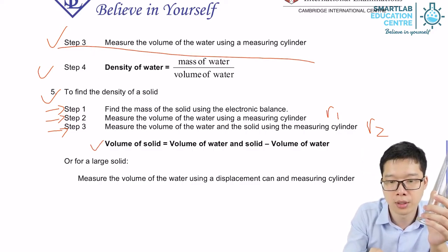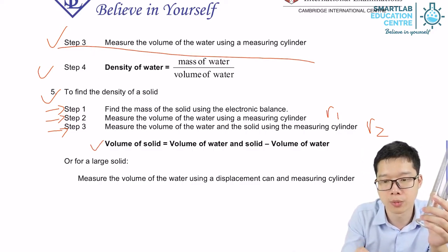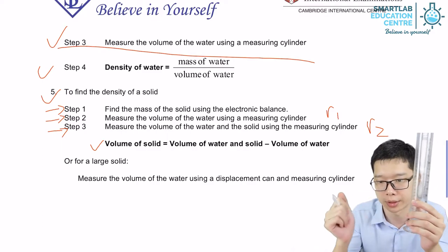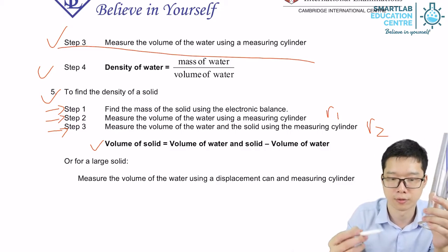The difference between R1 and R2 is actually the volume of the solid. So as stated over here, volume of solid equals to volume of water plus solid minus volume of pure water. So that's how we get the volume of solid.